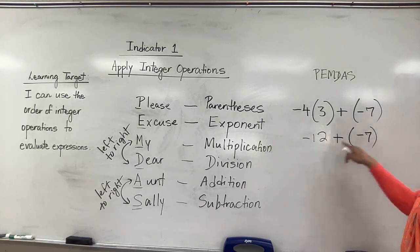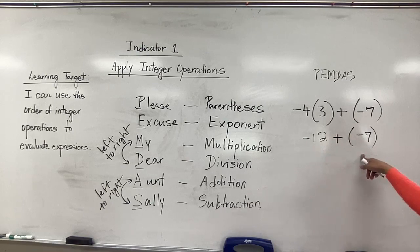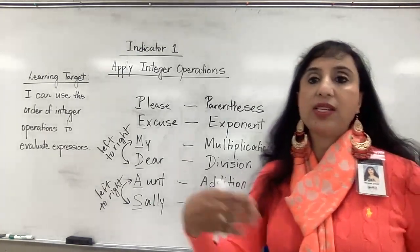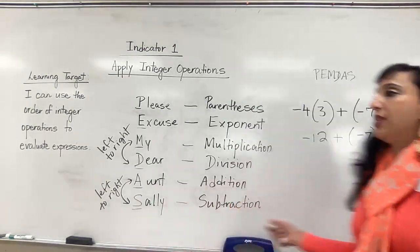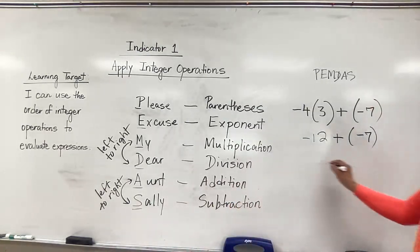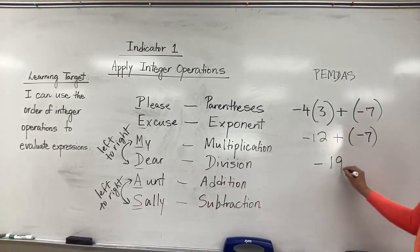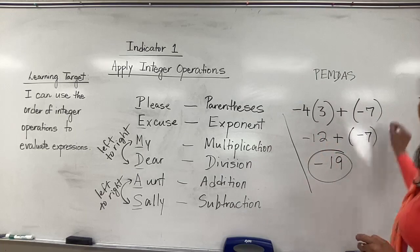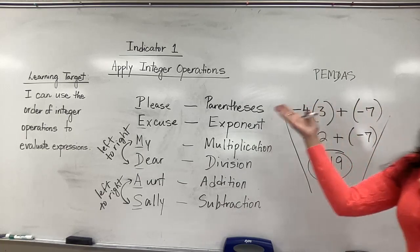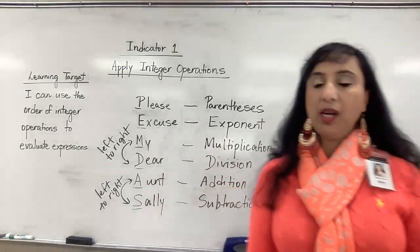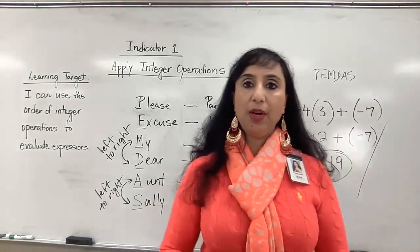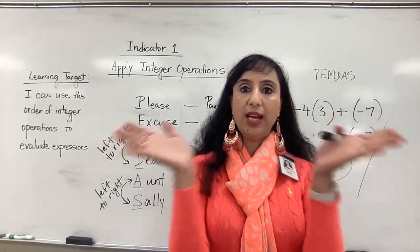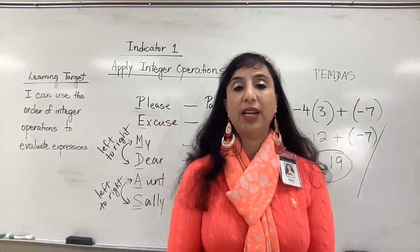Now we are looking at the addition step. We have the same signs — I have 12 negatives and I add on 7 more negatives, so that gives me negative 19 as my final answer. Always follow PEMDAS in this format, going like an ice cream cone down, because each step gets smaller and smaller until the final answer.